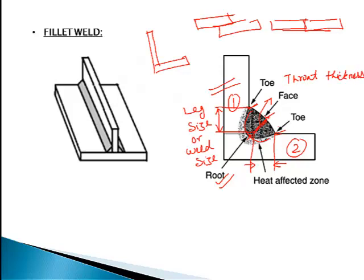The perpendicular distance from the face to the root is called the throat thickness. So mainly the fillet weld depends on leg size (or weld size) and throat thickness — the welding design depends on these two parameters.